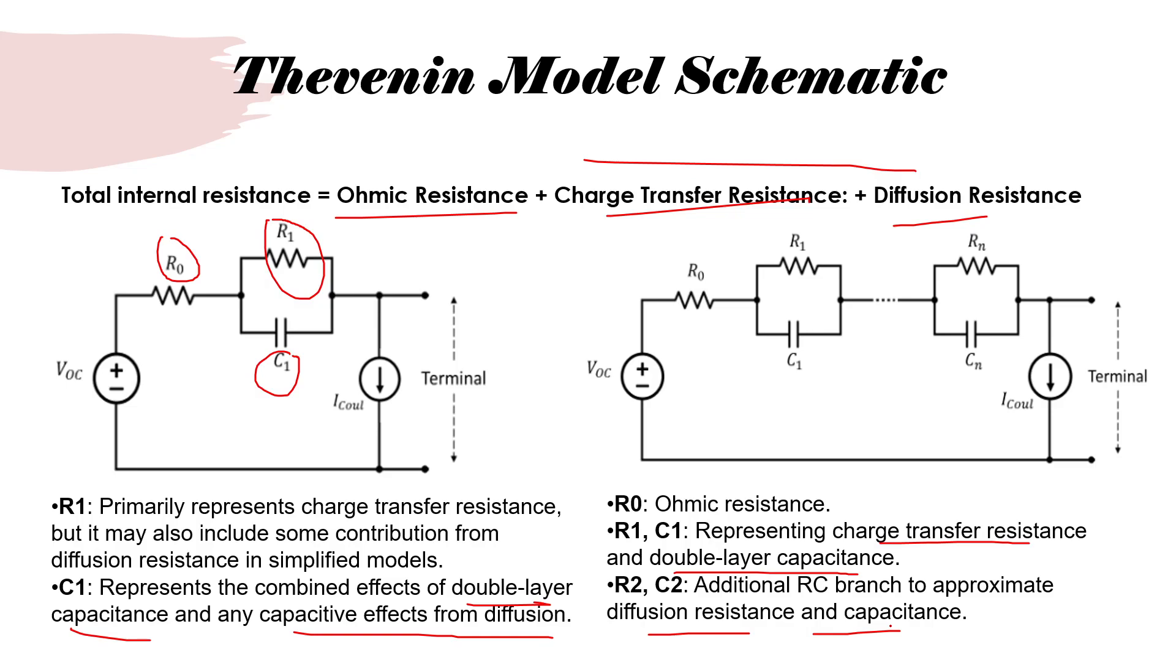In general, a two RC system is a good trade-off between accuracy and runtime. As you keep on increasing the RC branches, it might give you more accuracy, but it comes with a cost of more computationally expensive solution. When you are solving, there is more time required for the electrical solver to evaluate and give you a numeric solution.